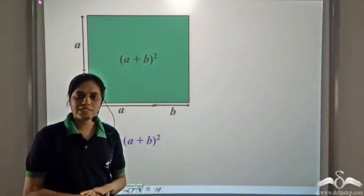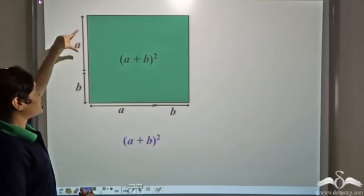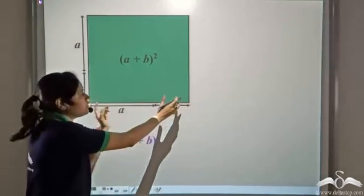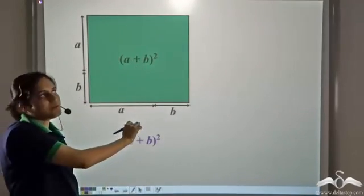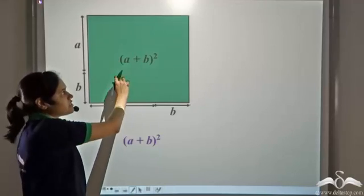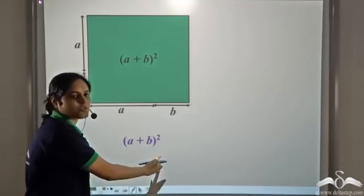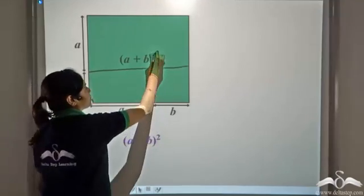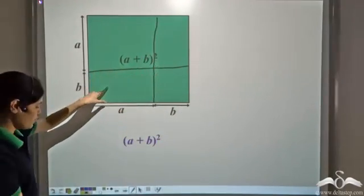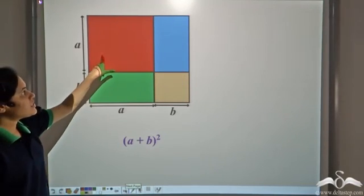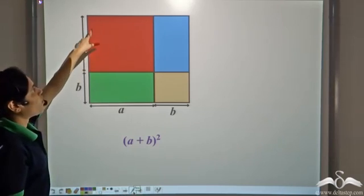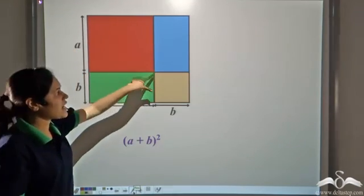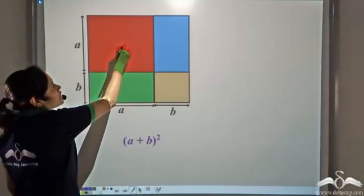So let us see if we can prove it geometrically as well. This is a square of side a plus b. This side is a plus b and this side is also a plus b. So this is a square whose side is a plus b. The area of this square will be side into side, which is a plus b square. Now let us divide this square into four small parts. The area of this part is a into a — it is a square with side a — so the area of this part is a square.